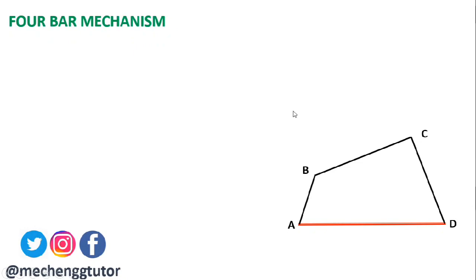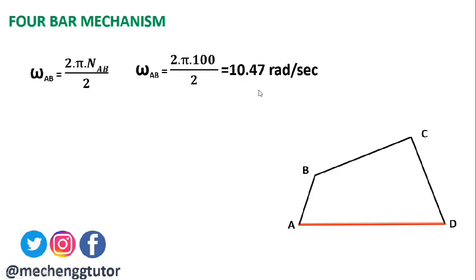The first step is to draw the given mechanism with the proper dimensions provided. Next, we convert the crank's rpm into angular velocity: omega_AB = 2π × N_AB / 60, where N_AB is 100 rpm. Substituting, we get omega_AB = 10.47 radians per second. With this angular velocity we can calculate the linear velocity of point B.